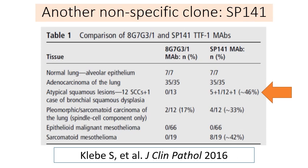Another very non-specific clone is SP141, studied in a 2016 paper by Klaby et al. Looking at the highlighted row, it shows 13 atypical squamous lesions — 12 squamous cell carcinomas and one dysplasia. With the G7G3/1 clone, none of the squamous cell carcinomas were positive, as expected. But with the non-specific clone SP141, almost half of these squamous cell carcinomas were positive. This is a big pitfall of using non-specific TTF1 clones, so stick with the G7G3/1 in your lab.